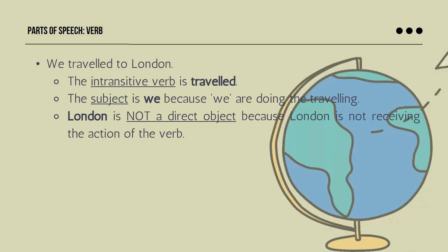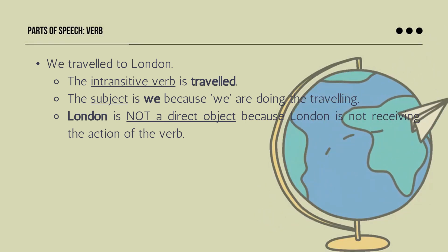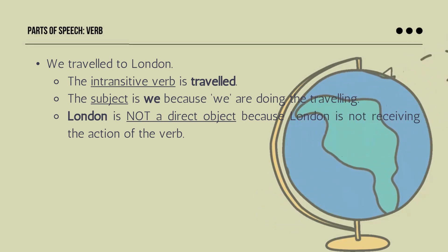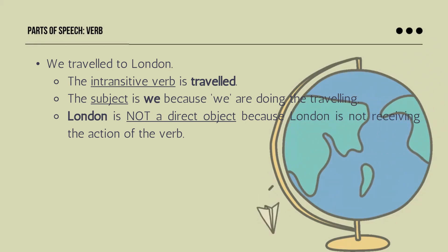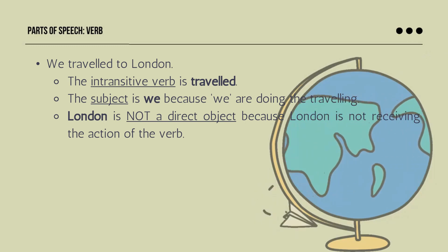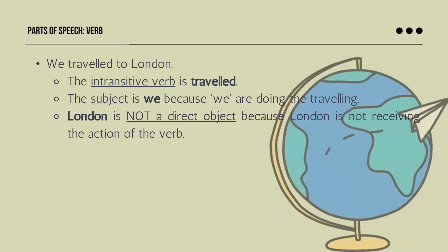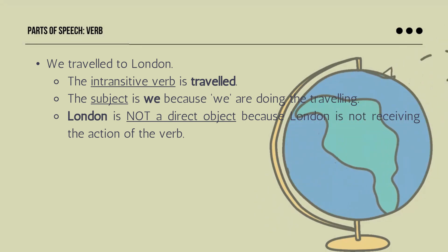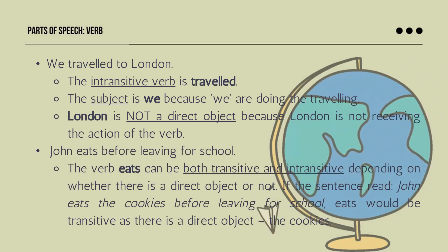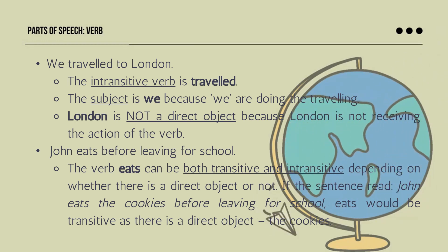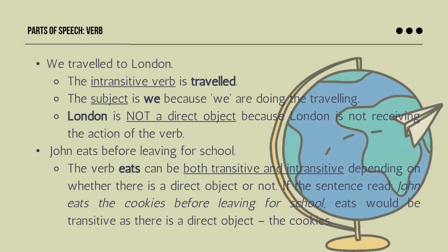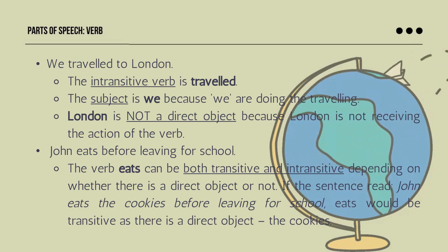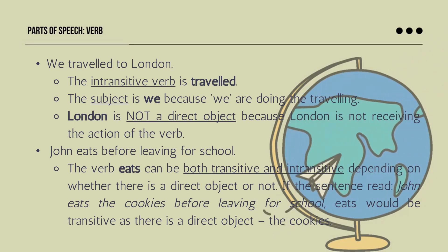Here is an example for intransitive verb: 'We traveled to London.' The intransitive verb is traveled, and the subject is we because we are doing the traveling. London is not a direct object because London is not receiving the action of the verb. Another example: 'John eats before leaving for school.' The verb eats can be both transitive and intransitive depending on whether there is a direct object or not. If the sentence read 'John eats the cookies before leaving for school,' eats would be transitive as there is a direct object — the cookies.